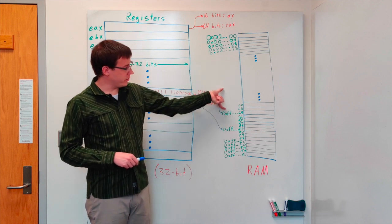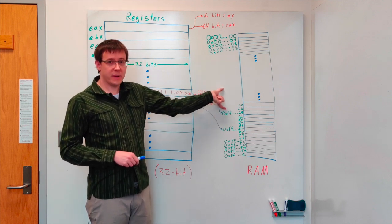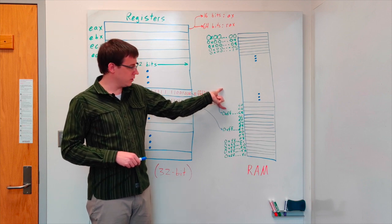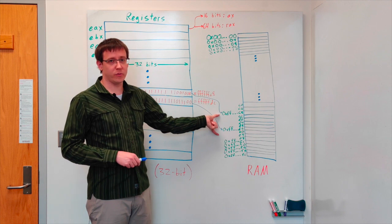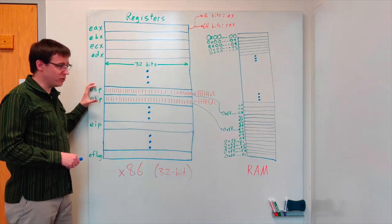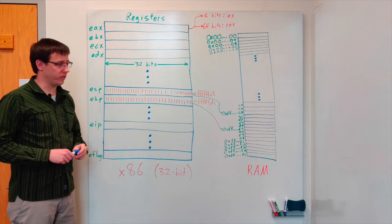If we call a new function the stack pointer and the base pointer will move up to make space for that new function's local variables, and when it returns the stack pointer and base pointer will move back down. All of this is accomplished by changing the values that are stored in these 32-bit registers.